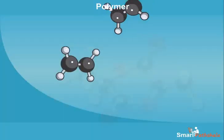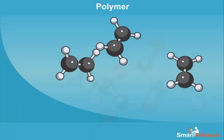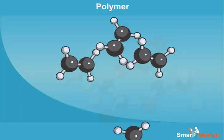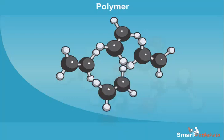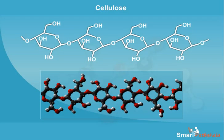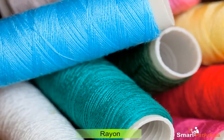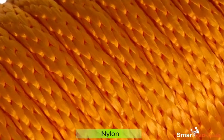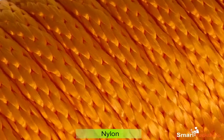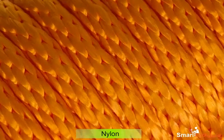Several monomers join together to form a large substance which is called a polymer. Synthetic fibers are also called polymers as they are made of many small chemical substances called monomers. Cellulose is a natural polymer made of several glucose units. Rayon, nylon, etc. are examples of artificial polymers.